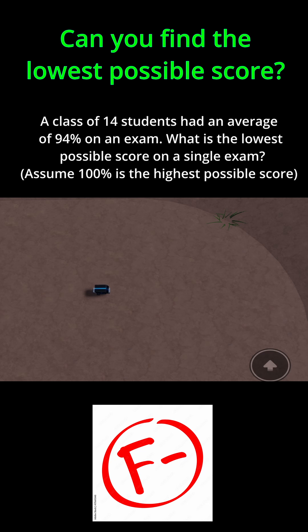To solve this problem, let's find the total sum of all the scores on this exam. I can do 14 students times an average of 94% on the exam. If you do that, you get 1316%, which is the total sum of all the percents that the students got on the test.